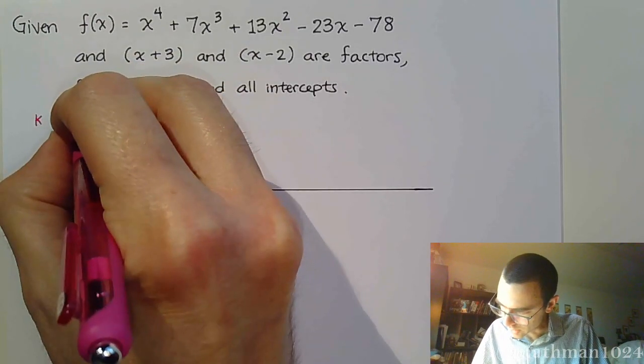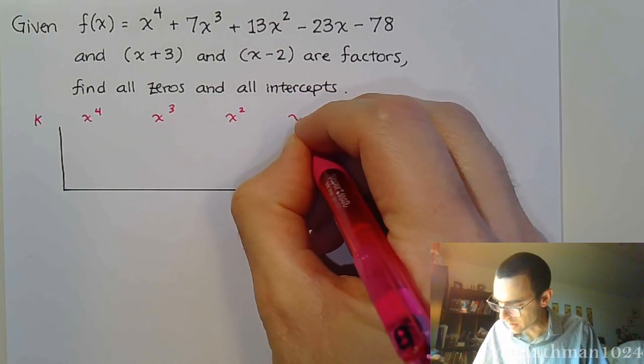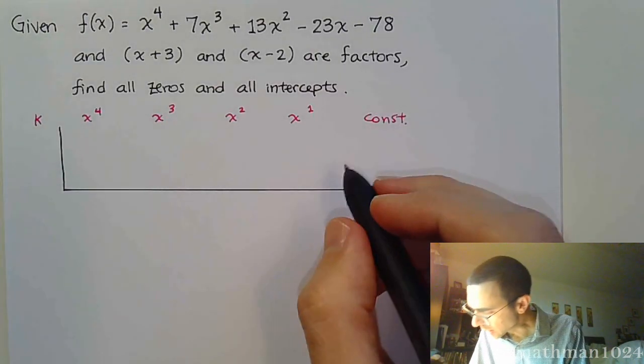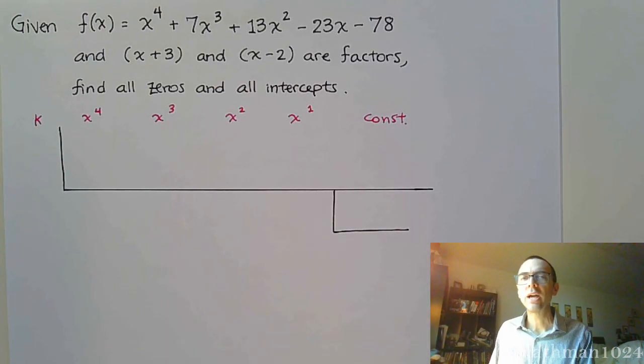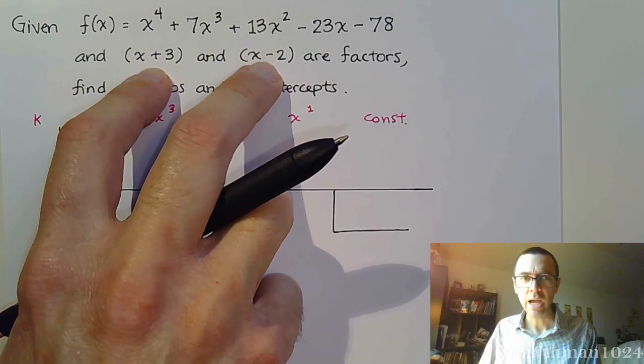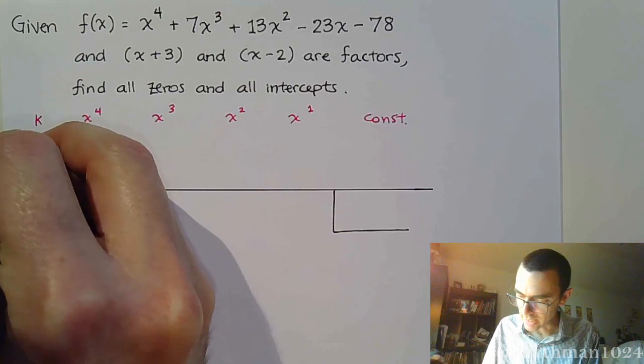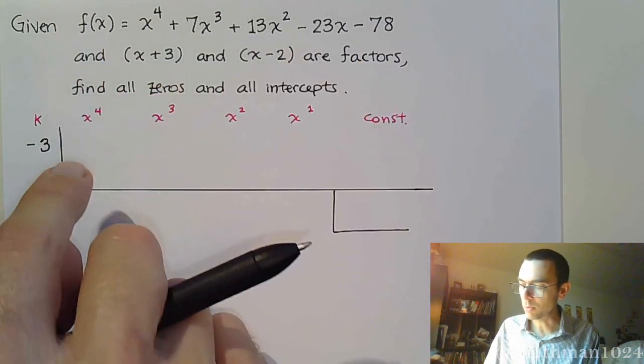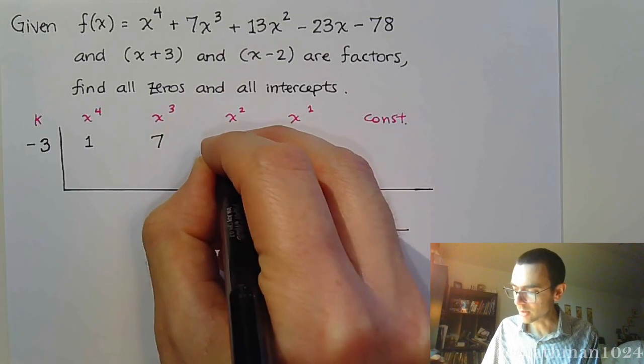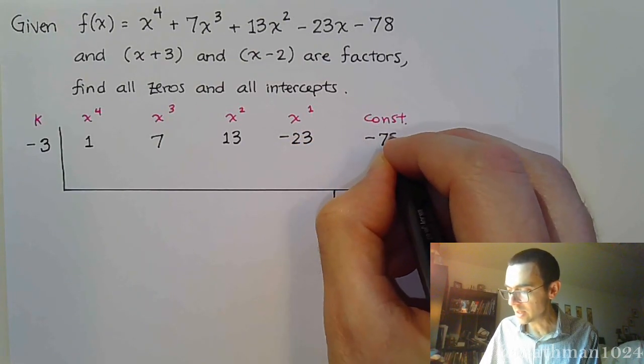So my k is going to go out here. This goes all the way up to x to the 4th, so we'll count it down. 4, 3, 2, 1, and then the constant. Remember, here at the very end, we're supposed to have a remainder of 0, or else we've done something wrong. So my k value, and we've got to pick one of these guys. Since this is the first one listed, let's use him, which means he has a k value of negative 3, so the opposite of what we see. Now we take these coefficients and we populate them here. So 1x to the 4th, 7x to the 3rd, 13x squared, this is a negative 23x, negative 78.